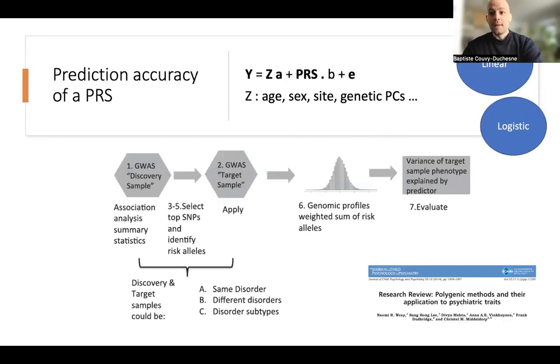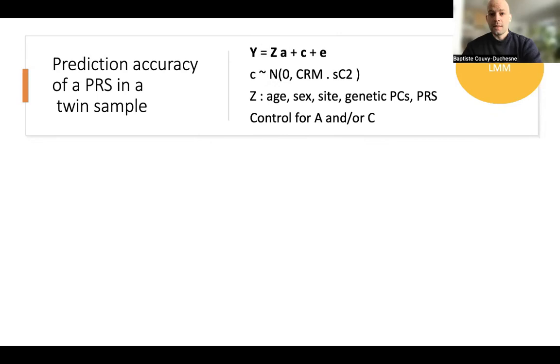This is often done using a linear model where we have the PRS here, the association between the PRS and the variable of interest, and then covariates which we want to control for. So that's the simple case. Now, what about if we want to do, we have a PRS calculated, but it's in a sample with a structure. Let's assume a twin sample where we cannot assume that our observations are completely independent, mostly because our MZ twins are going to have the same PRS value because they are genetic clones.